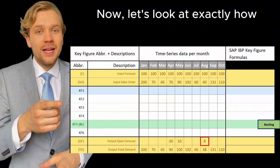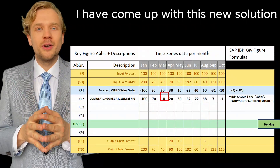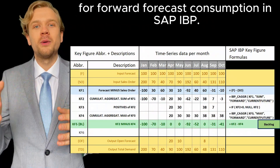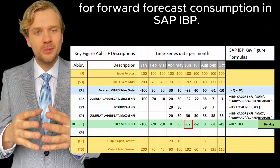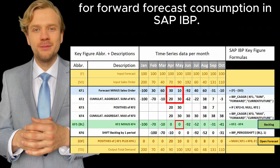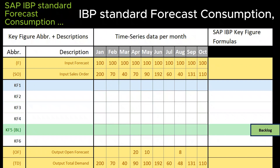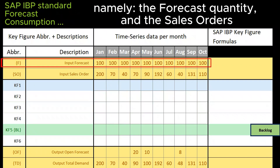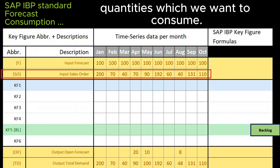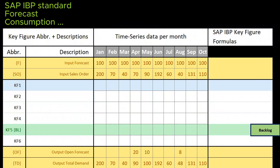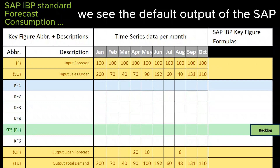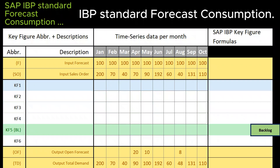Now, let's look at exactly how I have come up with this new solution for forward forecast consumption in SAP IBP. In the first two rows, we see the default input for the SAP IBP standard forecast consumption, namely the forecast quantity and the sales orders quantities which we want to consume. In the last two rows, we see the default output of the SAP IBP standard forecast consumption.